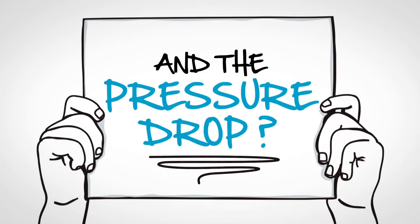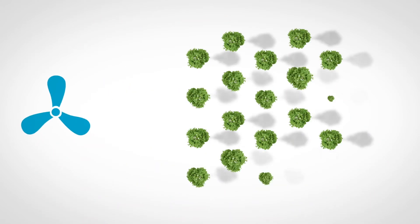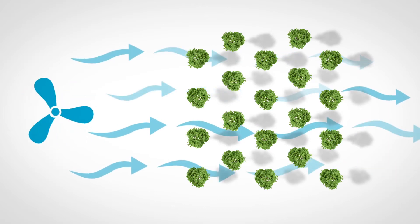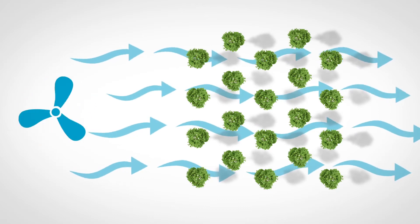Nautilus' less dense filter media ensures a much easier passage of the air. The result? A significant reduction of the pressure drop and a filter that is much more energy efficient.